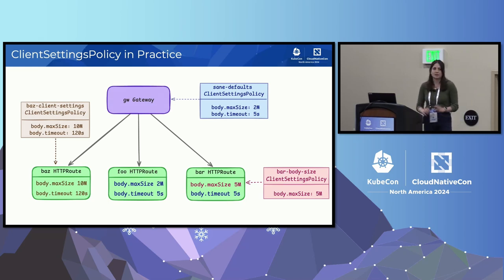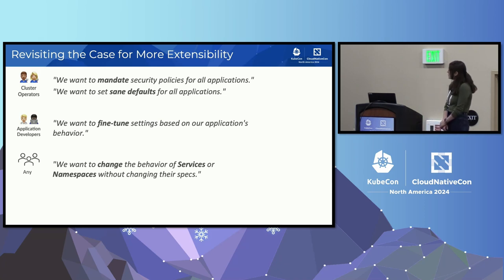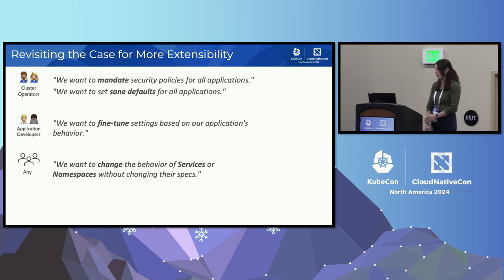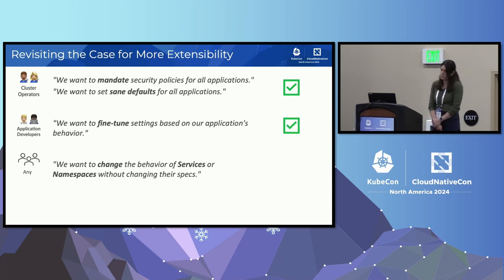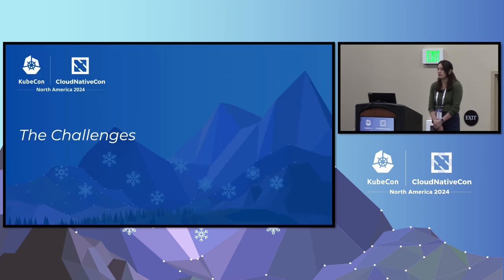So that's policy attachment as simply as I can put it. What have we achieved? With inherited policies using overrides, we can mandate security policies across all applications. Using defaults with inherited policies, we can set sane defaults and allow application developers lower in the hierarchy to change them. We can also target resources that aren't Gateway API resources — like services, as we saw with BackendTLSPolicy. We've added more extensibility. But how's the user experience? This brings us to the challenges.